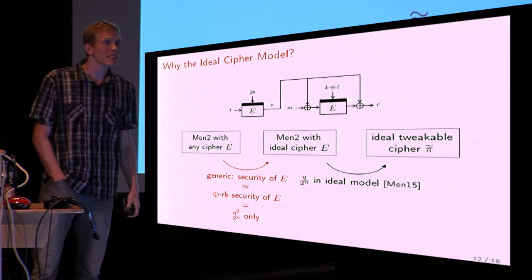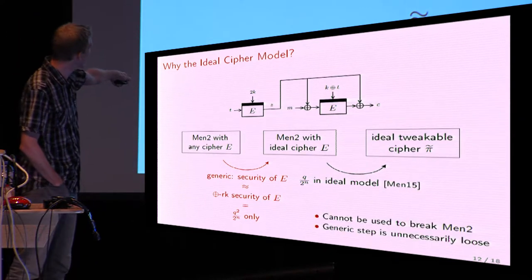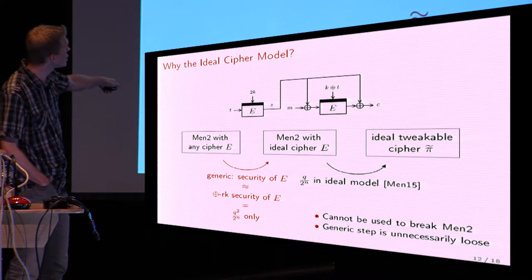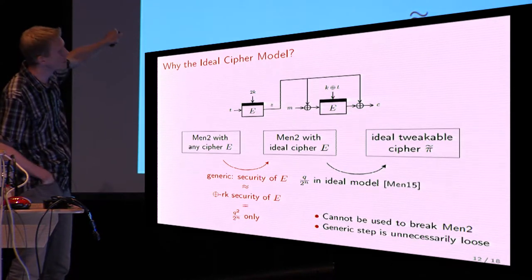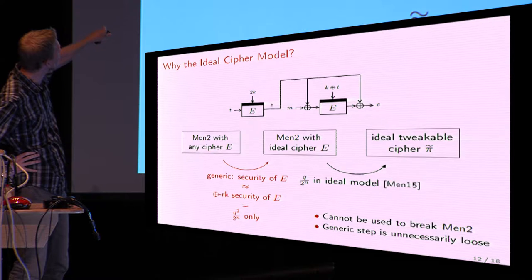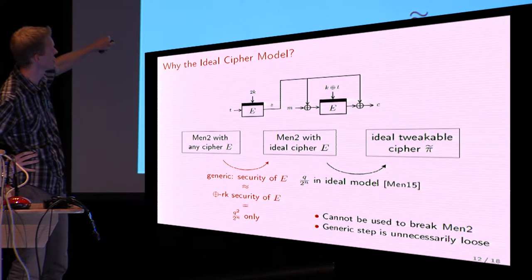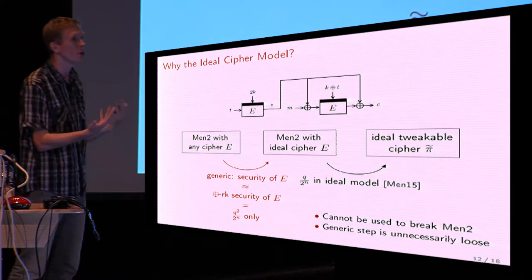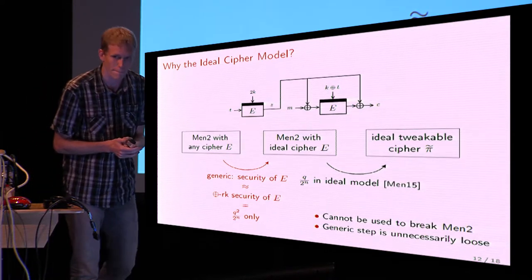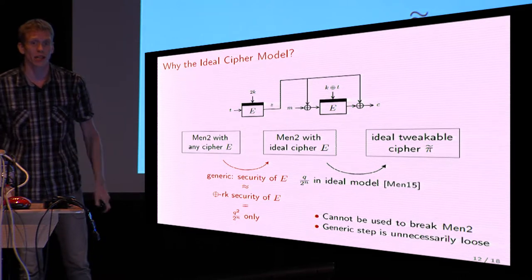This is strange, because the attack on the related key security of the block cipher cannot actually be used to break the entire scheme. This attack only focuses on the isolated block cipher, but in our case the block cipher is masked, and this mask really frustrates the attack. So it looks like this generic proof step is unnecessarily loose.